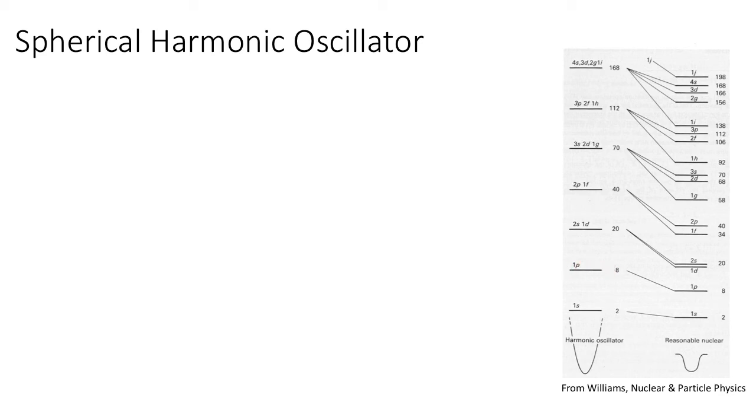And then a 1p is the next one up. But at the next level, we have 2s and 1d, 2p and 1f. And then at the next level, we add in the n=3, so we have 3s, 2d, 1g. And again, we go up in orders like that.